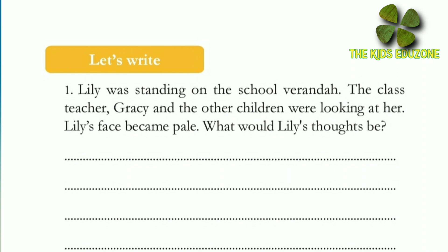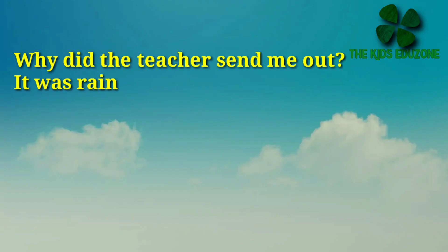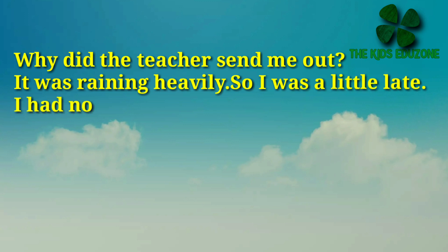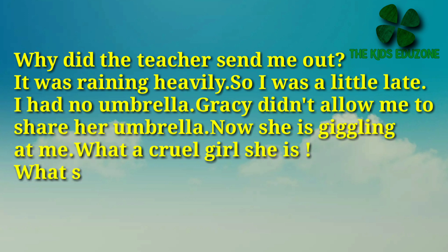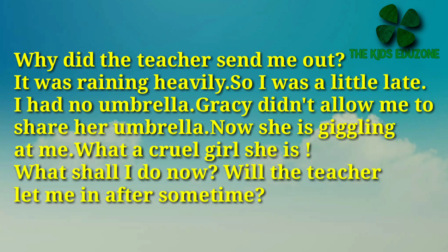Now, the answers for 'Let's Write.' Question number one: Lily was standing on the school veranda — we have to write her thoughts. Why did the teacher send me out? It was raining heavily, so I was a little late. I had no umbrella. Gracie didn't allow me to share her umbrella. Now she is giggling at me. What a cruel girl she is. What shall I do now? Will the teacher let me in after some time?